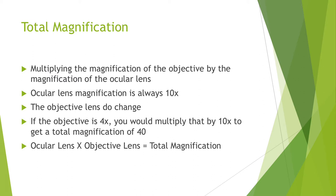On the last bullet point, you will see an equation to give you total magnification. Another example: if the objective lens is 10x, you'll multiply it by the ocular lens, which is also 10x, and get a total magnification of 100.